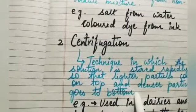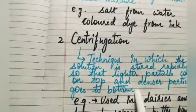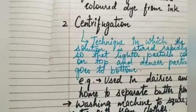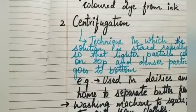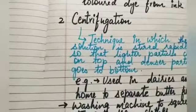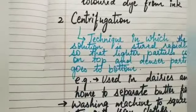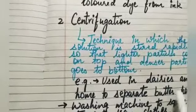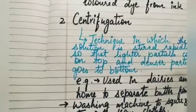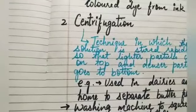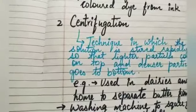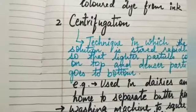This technique is called centrifugation. One very common example of centrifugation is in dairies or at home where we separate butter from cream. We stir the cream very rapidly and we separate the butter from it.